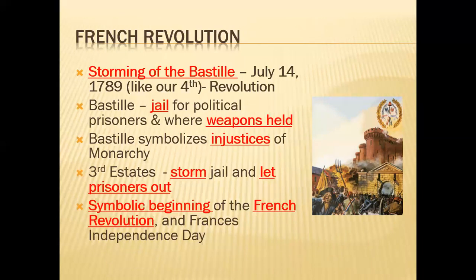This is the beginning of the French Revolution proper: the Storming of the Bastille. The Bastille was a jail for political prisoners that also had a stockpile of weapons. On July 14th, 1789 — their version of the 4th of July, called Bastille Day — the people attack this prison and free the prisoners, because it was a symbol of the injustices of the monarchy and their abuse of power over the people.